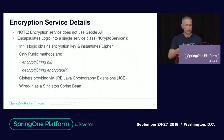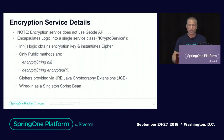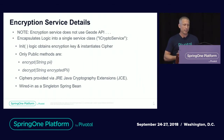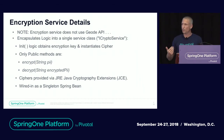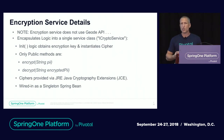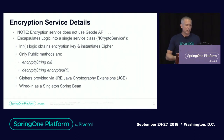We encapsulate the encryption functionality within a bean called ICryptoService, which does not use the Geode API itself. The initialization logic is responsible for obtaining an encryption key — this may be injected, or in a production implementation it reaches out and gets the key from a vault server. There are only two public methods: encrypt with a string and decrypt with a string. We provide the option to load any cipher available through the Java Cryptography Extensions (JCE), which handles variance in international regulatory requirements. This is wired in as a singleton Spring bean.